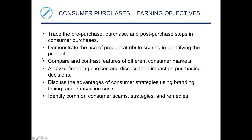There are a couple of learning objectives for this chapter. First, trace the pre-purchase, purchase, and post-purchase steps in consumer purchases. Second, demonstrate the use of product attribute scoring in identifying a product. Third, compare and contrast features of different consumer markets. Fourth, analyze financing choices and discuss their impact on purchasing decisions. Fifth, discuss the advantages of consumer strategies using branding, timing, and transaction costs.